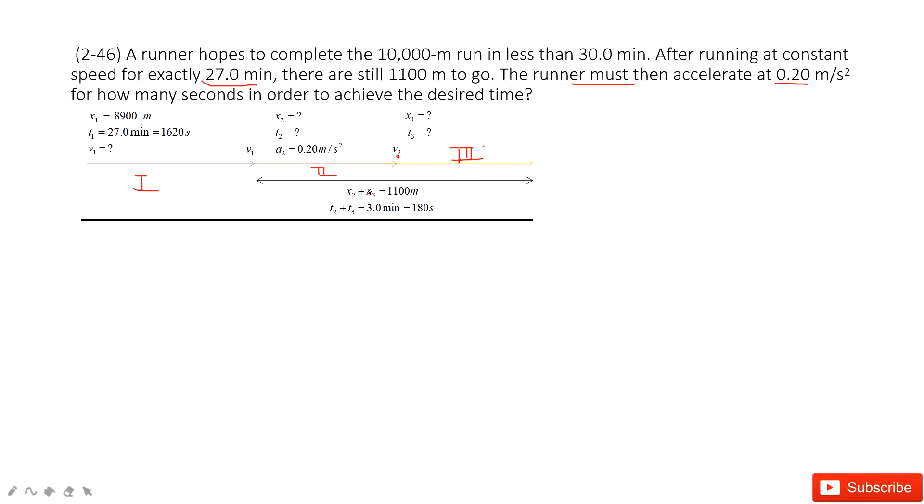Now it's clear. So now we list all the known quantities there. We do the calculations. Very easy, we can calculate to find v1.